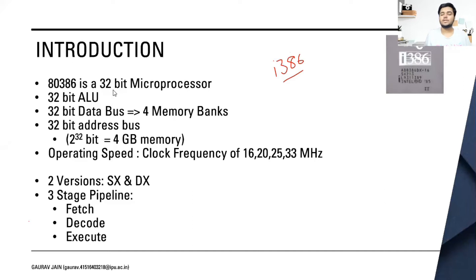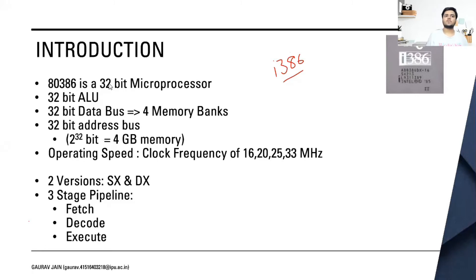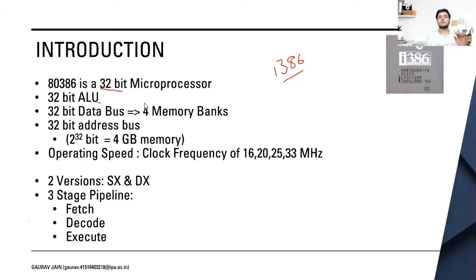About the 80386 microprocessor — it was a 32-bit microprocessor. It was better than the previous one, because the previous one was 16-bit. It had a 32-bit ALU, which is the arithmetic logic unit, and correspondingly it had a 32-bit data bus.